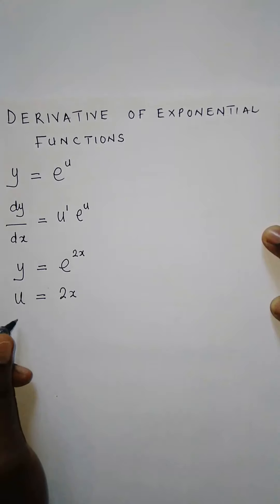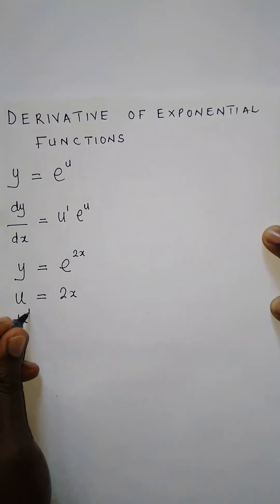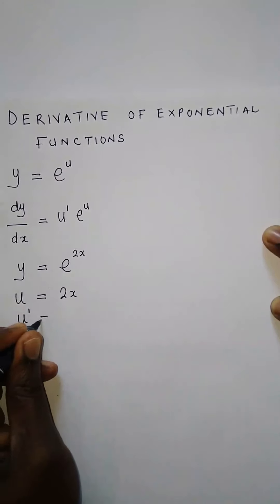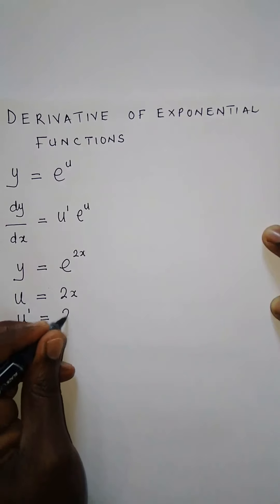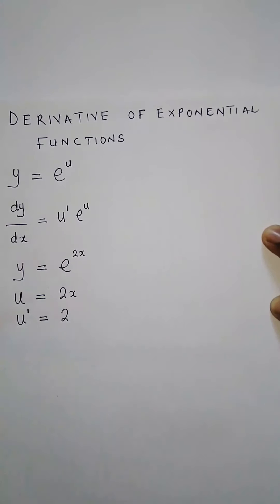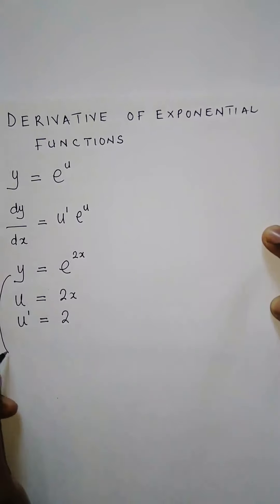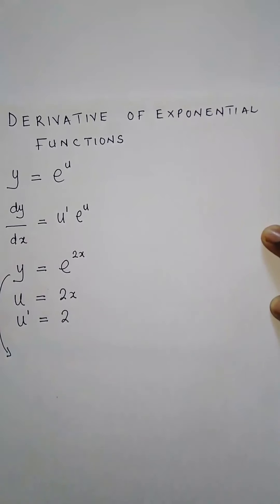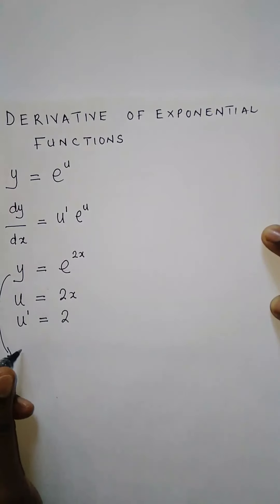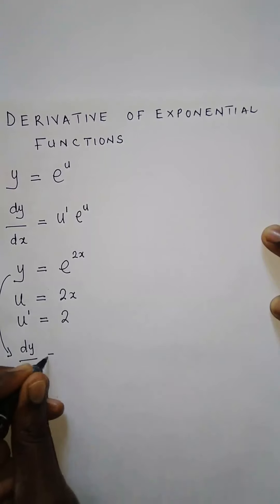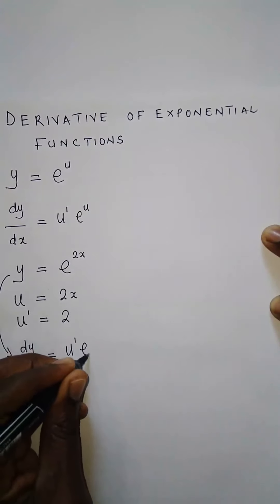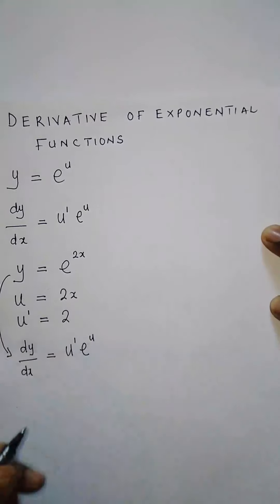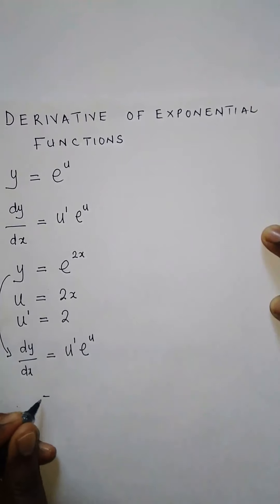We can write du/dx using the notation u prime. Differentiating 2x, we just get 2. Now, finding the derivative of this function, dy/dx is equal to u prime times e to the power u. So we're just going to substitute here.